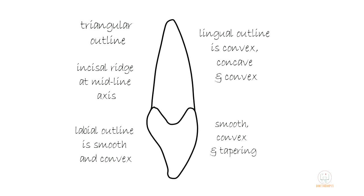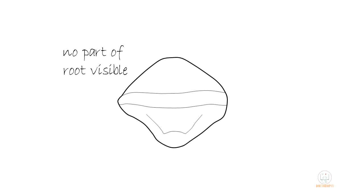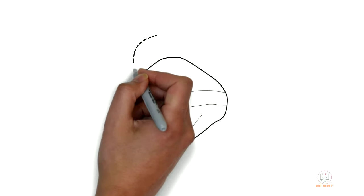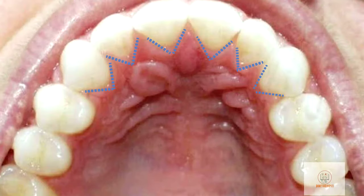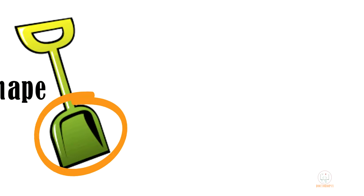Coming to the distal aspect — it is exactly the same as that of the mesial aspect. Lastly, the incisal aspect: as with all permanent teeth, no part of the root is visible from the incisal aspect. The crown is broader mesio-distally than labio-lingually. The labial outline is smooth and convex. The lingual outline is narrower, showing the lingual convergence, which is a feature of all permanent anteriors. The incisal ridge runs horizontally.